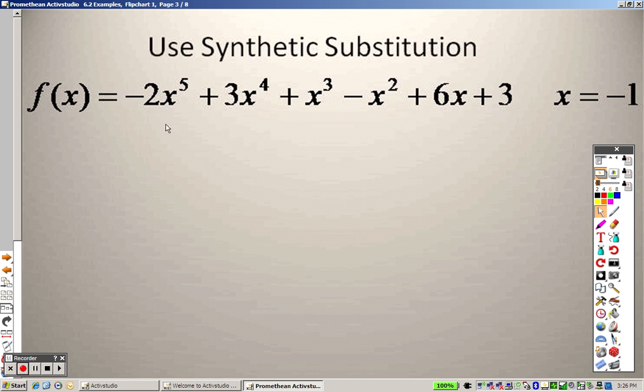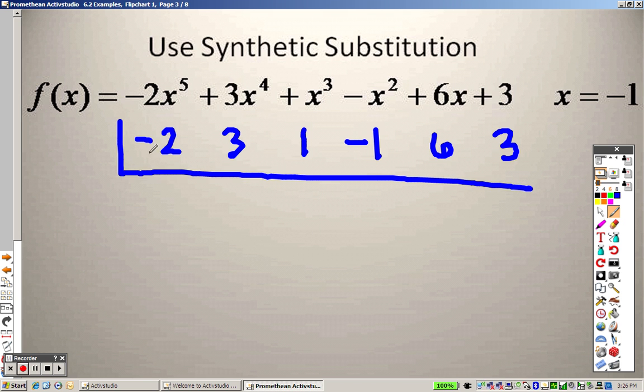So all you need to do for synthetic substitution is you take all the coefficients and you write them down. And you make sure that they are in order, so it needs to be in standard form. You also need to make sure that if you're missing any x's, see how we have x to the fifth, x to the fourth, x cubed, x squared, x, and so on. If you're missing any of those,